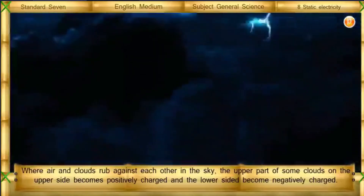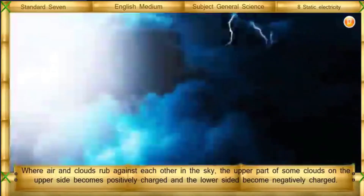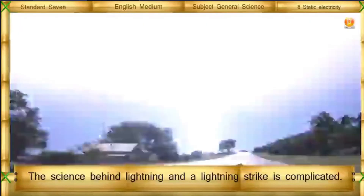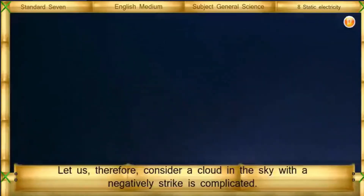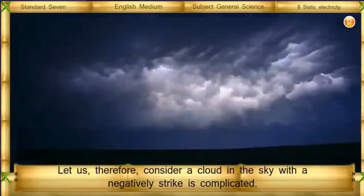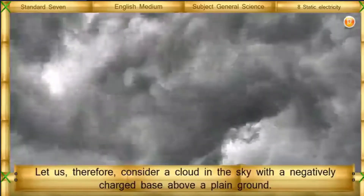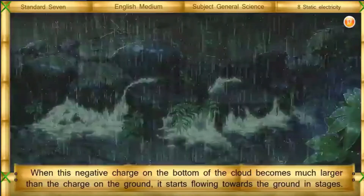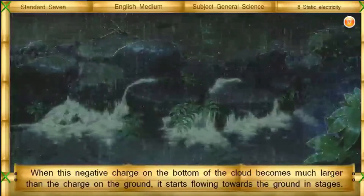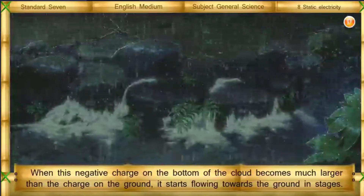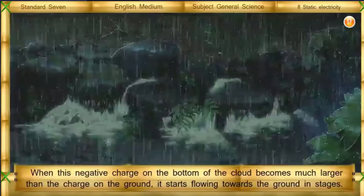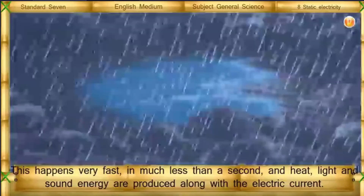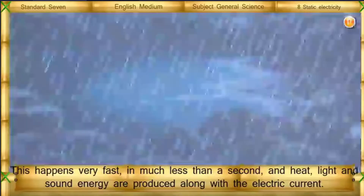Lightning: where air and clouds rub against each other in the sky, the upper part of some clouds becomes positively charged and the lower side becomes negatively charged. Consider a cloud in the sky with a negatively charged base above a plain ground. When the negative charge on the bottom of the cloud becomes much larger than the charge on the ground, it starts flowing towards the ground in stages. This happens very fast — in much less than a second — and heat, light, and sound energy are produced along with the electric current.